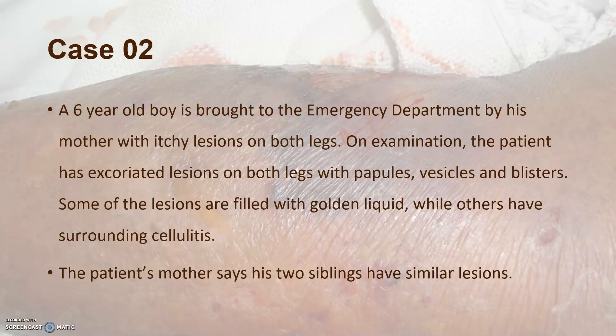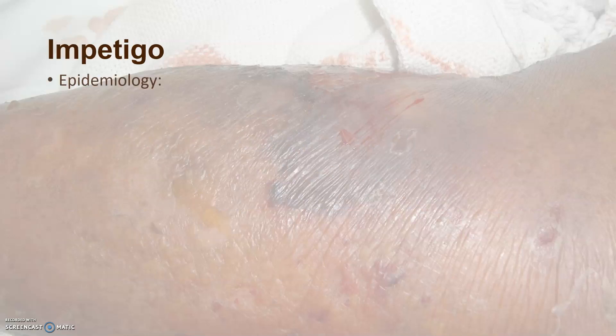Let's move to the second case. A six-year-old boy is brought to the emergency department by his mother with itchy lesions on both legs. On examination he has excoriated lesions on both legs with papules, vesicles, and blisters. Some of the lesions are filled with cloudy liquid while others have surrounding cellulitis. The patient's mother says his two siblings have similar lesions. Pause the video and see if you can figure out what this is. This is of course impetigo.